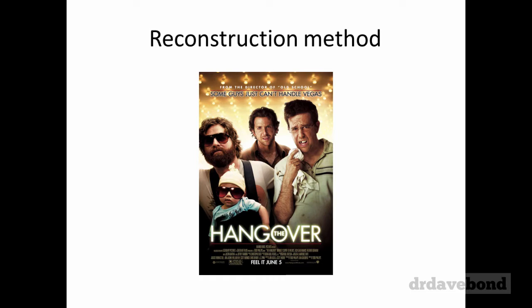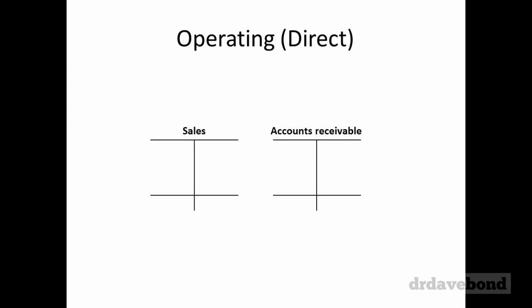First up when we look at the operating cash flows is what happens with cash receipts from customers. To do this, the reconstruction method uses T-accounts, and I much prefer this method because it is pretty much bulletproof — as long as you make sure you put the accounts on the side they're meant to be on, everything else works out.